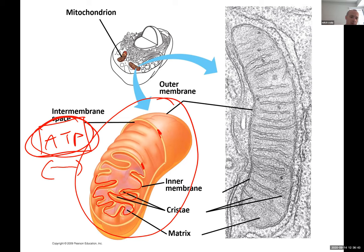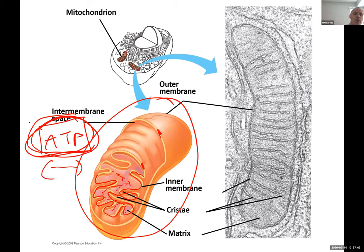Inside the mitochondria there is a liquid-like fluid called the matrix. The matrix contains all the enzymes and chemicals required for the production of ATP. Here you can see a mitochondrion under the electron microscope.